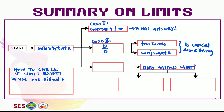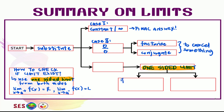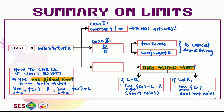For a limit to exist, we need to use one-sided limits from both sides. Let's say the limit when x is approaching a from the right for f(x) is called R, and the limit when x is approaching a from the left for f(x) is called L. If L equals R — meaning the limit from the left equals the limit from the right — then the limit as x approaches a for f(x) equals that value, and the limit exists. But if L is not equal to R, meaning the limit from the left is not equal to the limit from the right, then the limit as x approaches a for f(x) does not exist.